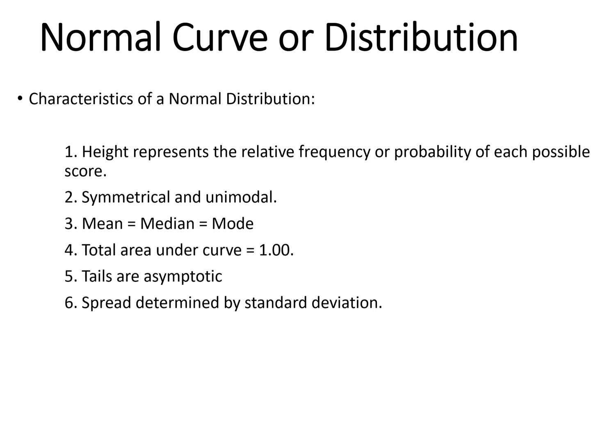What are some characteristics of a normal distribution? First and foremost, the height of the distribution on the y-axis represents the relative frequency or probability of each possible score. A higher density means that that score is more possible, whereas a lower density indicates that the score is less probable or occurs with less frequency in the distribution.